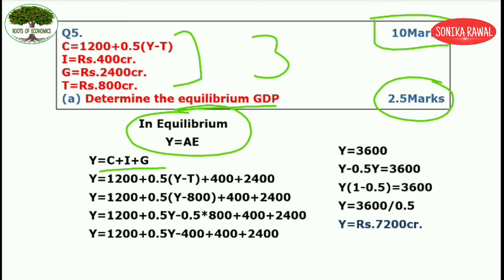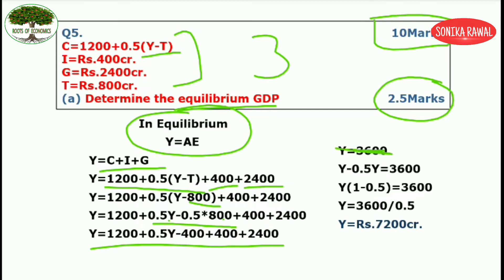Simply put the values. The consumption function already has Y minus T written in place of Yd. I is given as 400 and government expenditure is given as 2400. Put T value as 800. Open the brackets — 0.5 will multiply with both Y and 800. Bring all Y terms to the left side. Finally, your answer comes out as Y equals 7200 crores. This is your part A — you have secured 2.5 marks.